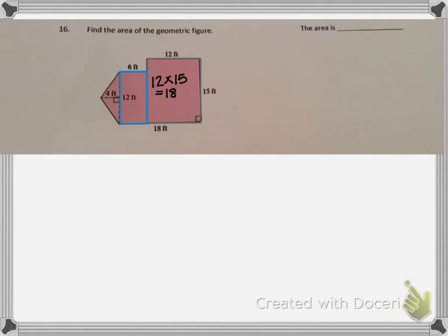The first rectangle is 12 feet by 15 feet for a total of 180 square feet. The second rectangle is 6 feet by 12 feet for an area of 72 square feet.